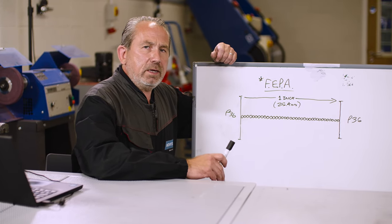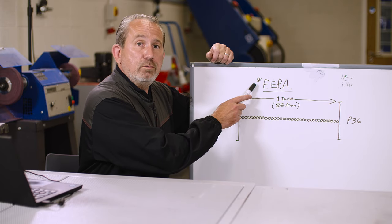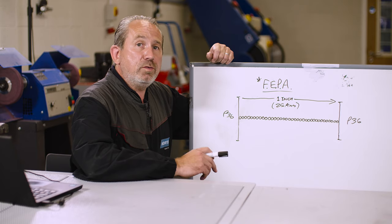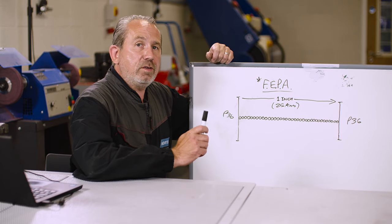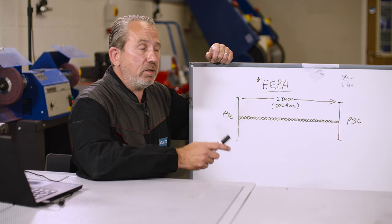when you see a grit grading and it starts with a P, it means it's according to the rules by FEPA. Now FEPA is the Federation of European Producers of Abrasives, and they denote what a particle or grit size actually is. So when you order a P60, you know you're going to get a grade 60 abrasive grain.